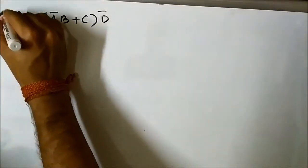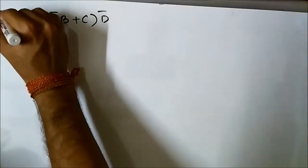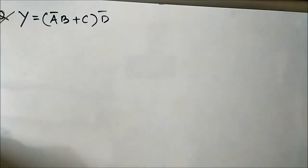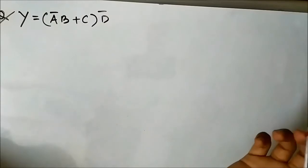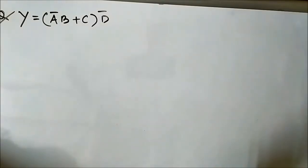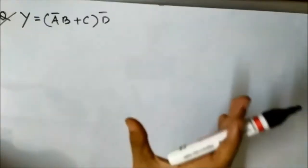Hello friends. Here we will continue with our NAND gate Boolean implementation series of videos. We have another Boolean expression which we have to implement using NAND gates. In this question we have four variables a, b, c and d. So far we have discussed questions in which there were three signal variables.